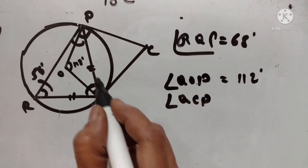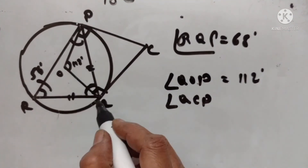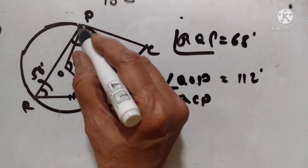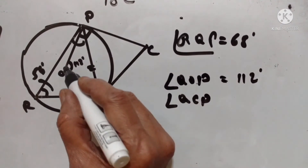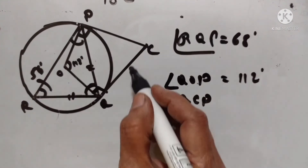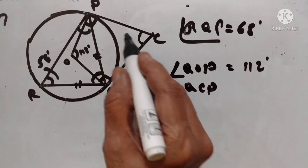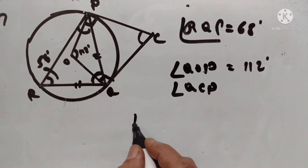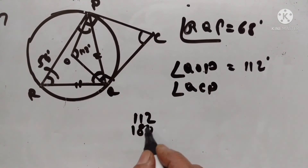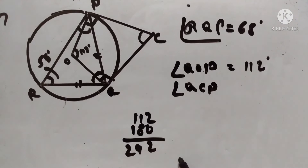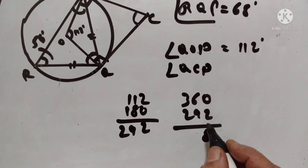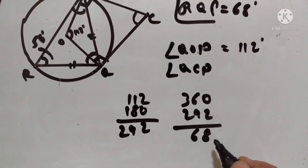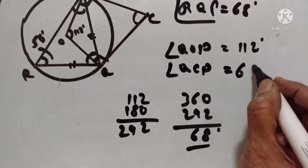In quadrilateral POQC, angle POQ equals 112 degrees, angle OPC equals 90 degrees, and angle OQC equals 90 degrees. The sum of angles in a quadrilateral equals 360 degrees. So 112 plus 90 plus 90 equals 292. Therefore, angle QCP equals 360 minus 292 equals 68 degrees.